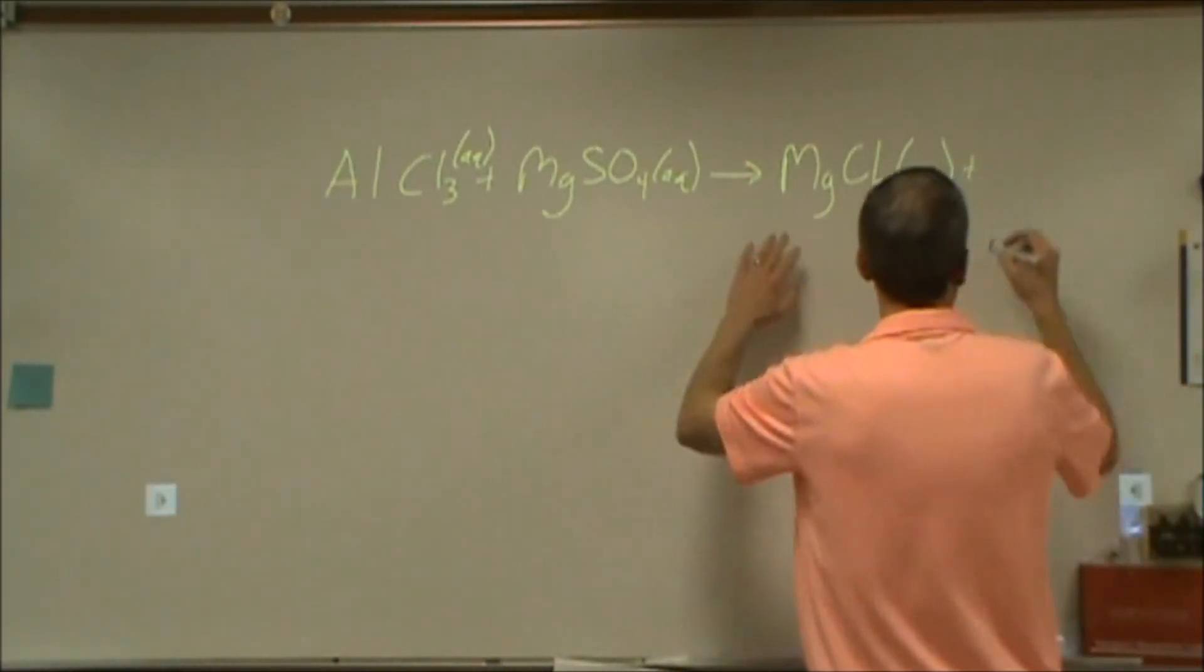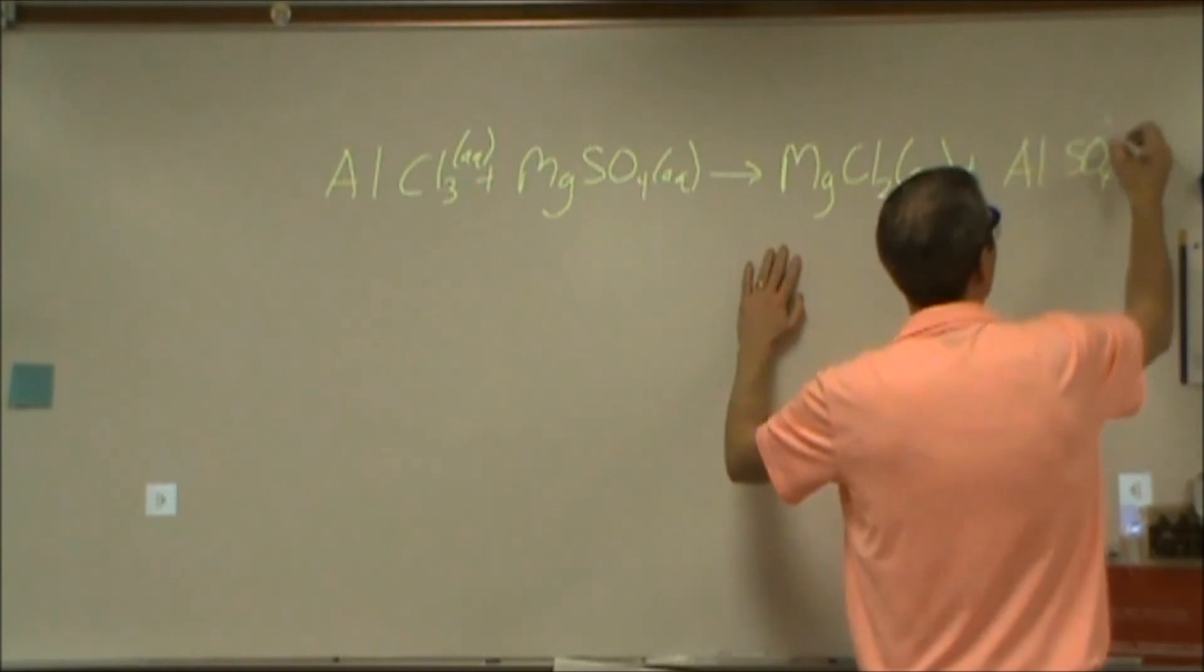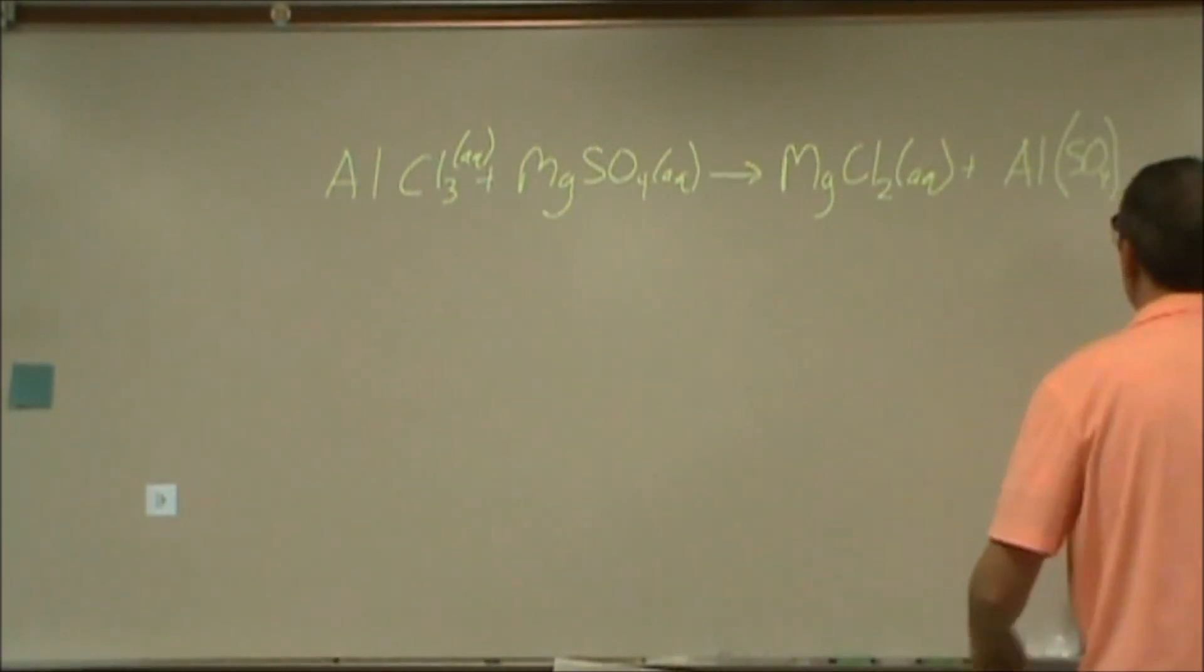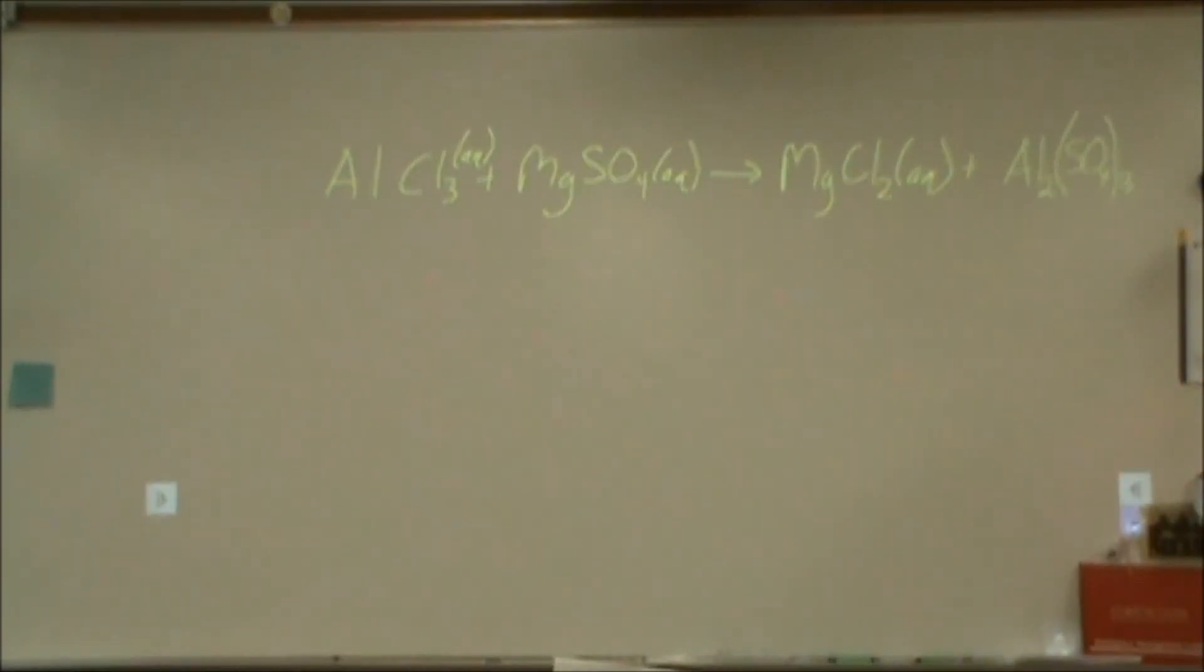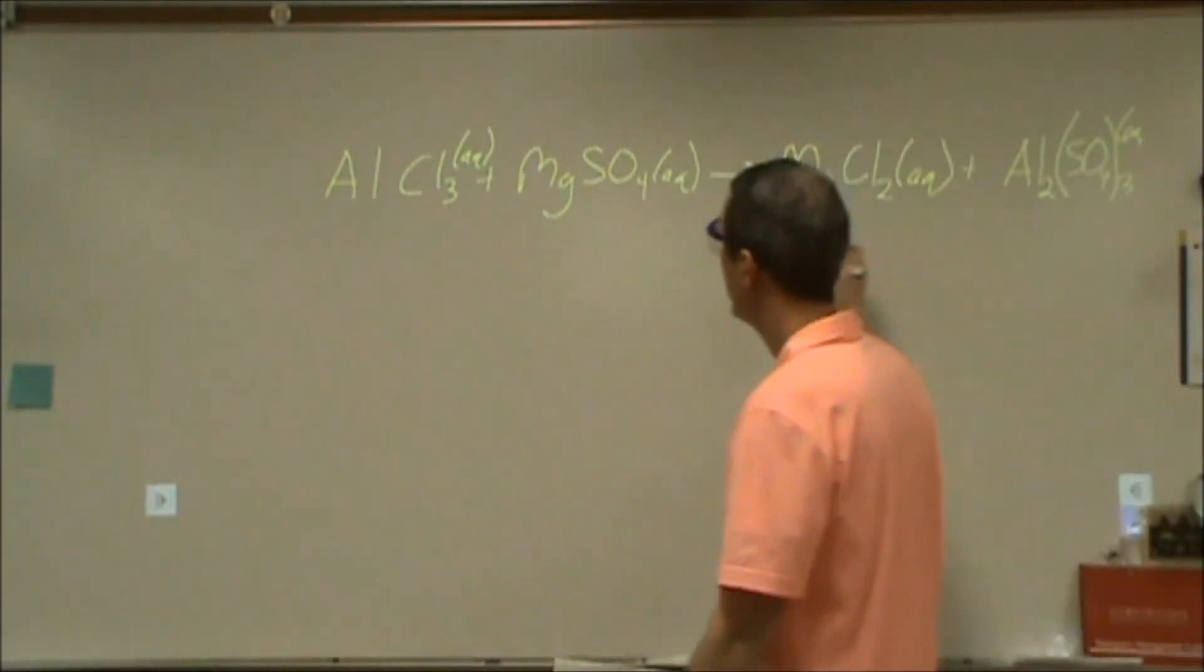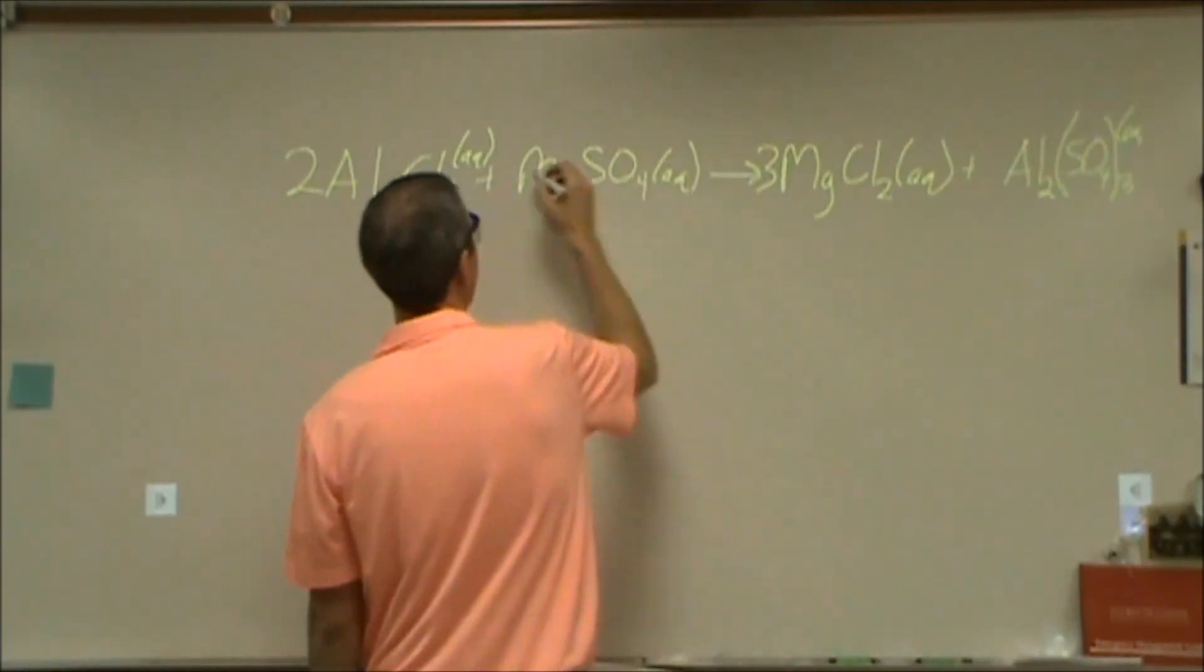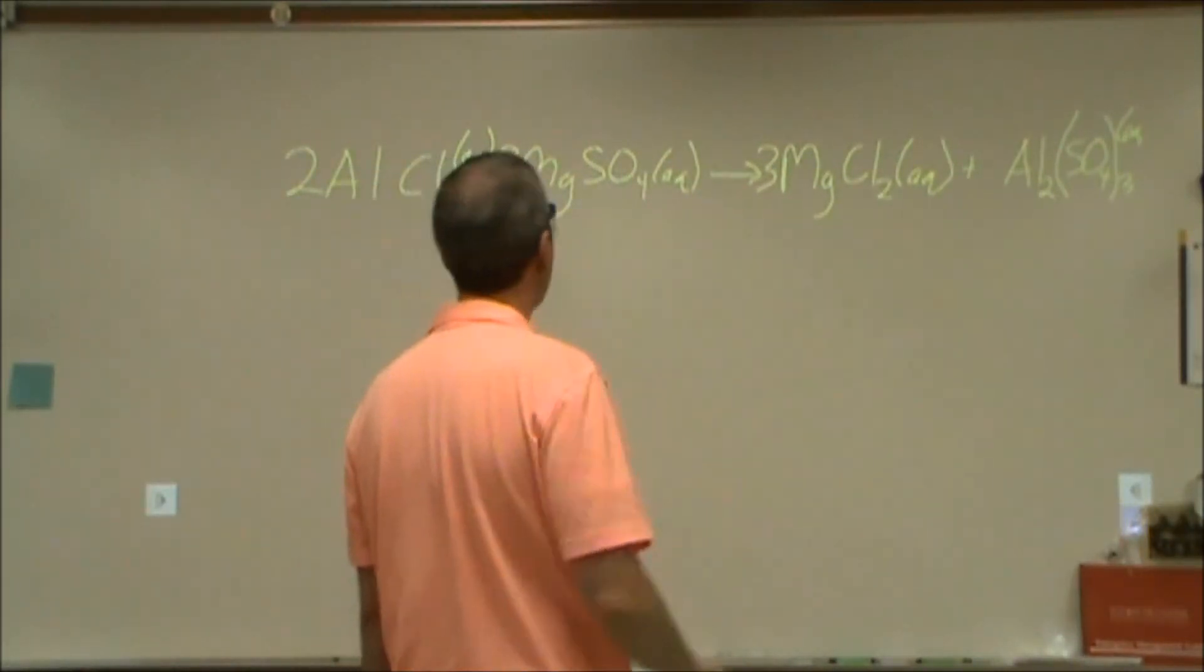And then, we're also going to end up with aluminum and sulfate. So, aluminum is three plus, sulfate is two minus. So, to balance this, we're going to have two aluminums for every three sulfates. And I believe that is also soluble in water, so it's aqueous. Then, I'm going to go through a balancing. So, now I'm looking at cases where I'm going to need two of these. I'm going to need three of these, three of these.